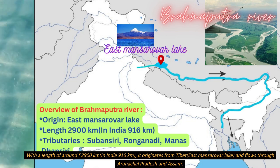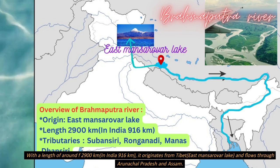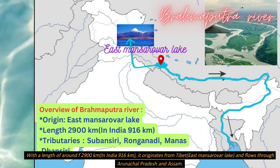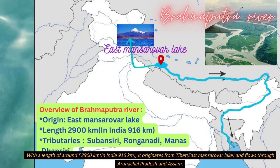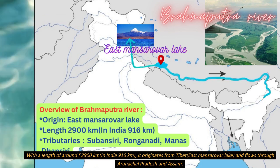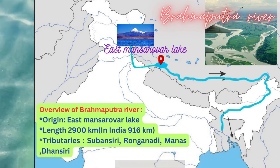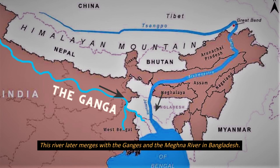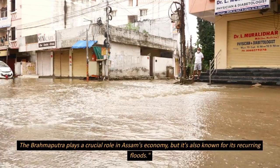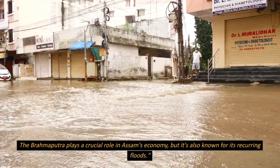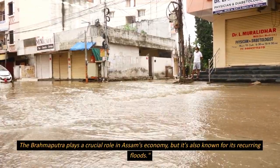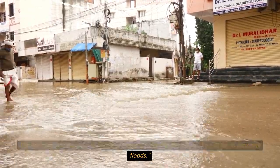The Brahmaputra originates from east Mansarovar Lake in Tibet and flows through Arunachal Pradesh and Assam. The famous tributaries are Subansiri, Ranganadi, Manas, and Dhansiri. The Brahmaputra river later merges with the Ganges and the Meghna river in Bangladesh. The Brahmaputra plays a crucial role in Assam's economy but is also known for its recurring floods.